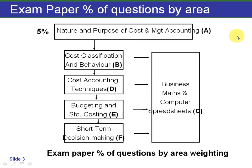The first section is 5%. The second section, cost classification and behaviour, is 10%. This area looks at fixed costs, semi-variable costs, and graphical interpretation in the main.